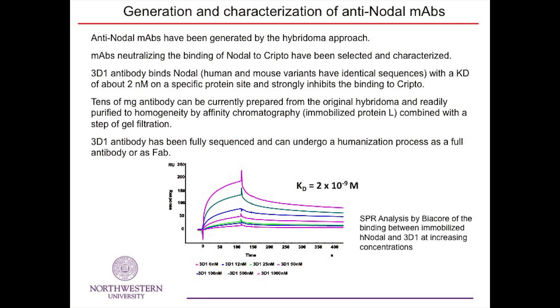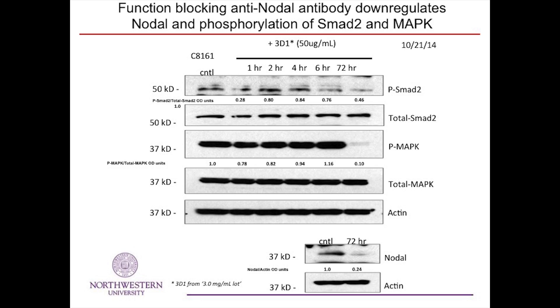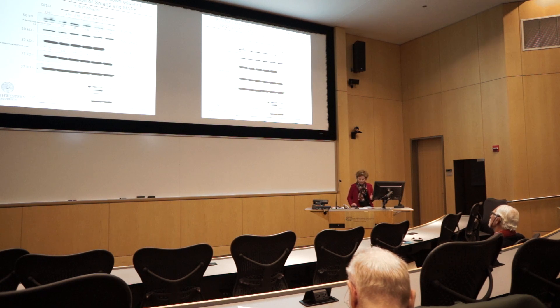For the last few years we've been working with Italian collaborators, specifically protein engineers, to generate and characterize the first antinodal monoclonal antibody that is function-blocking for tumor cells to be used for cancer therapy. This antibody has been fully sequenced and is now undergoing humanization for the first clinical trial. We've shown that if we treat metastatic melanoma cells called C8161 cells, it blocks the expression of nodal by western blot analysis, and also blocks the downstream signaling of phospho-SMAD2 and phospho-MAP kinase.